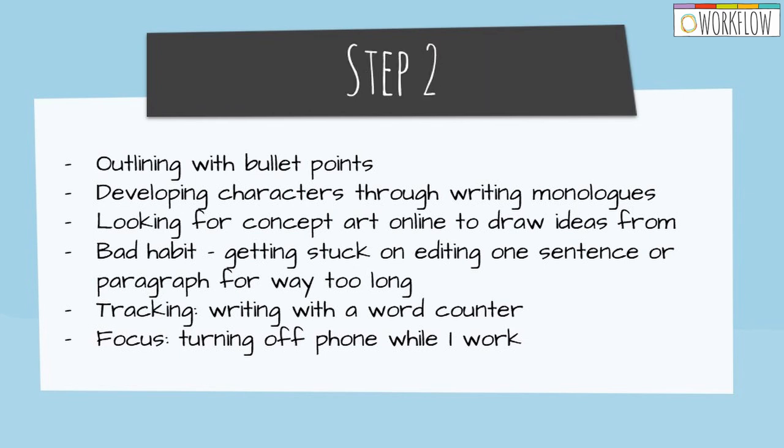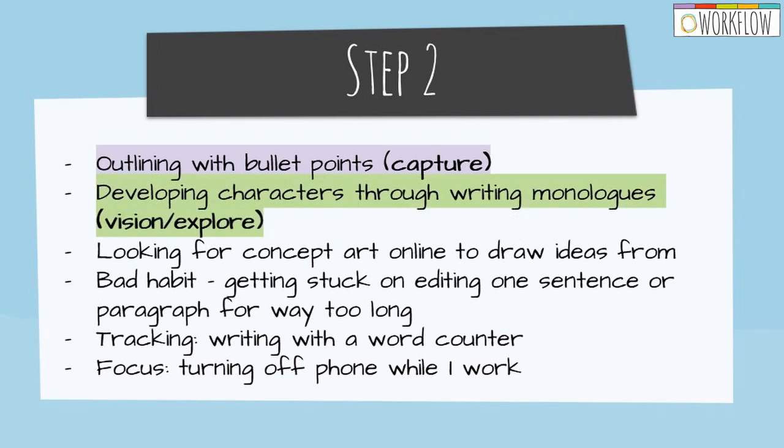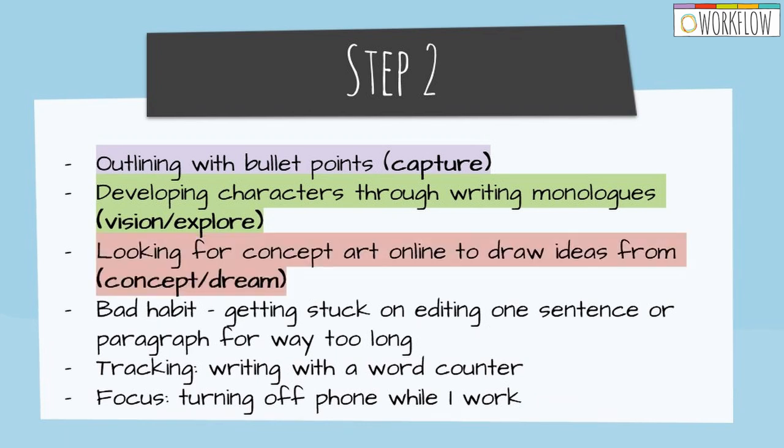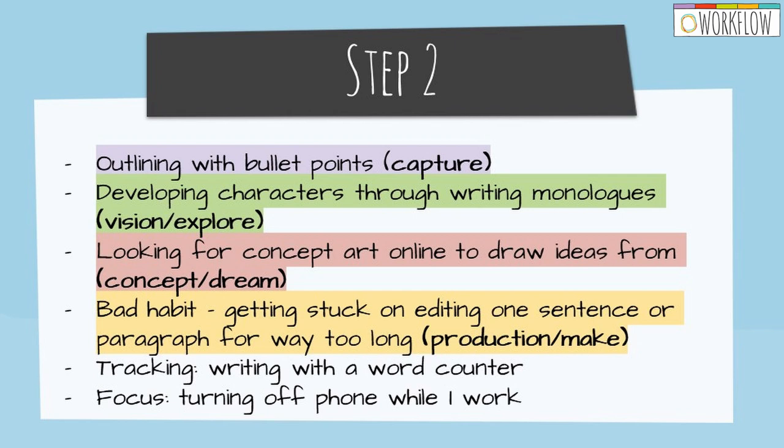Step number two. I want you to go through the list and try to identify where each habit fits in the workflow I just described. And you can even color code it to make it more fun. So, taking the same example. Outlining with bullet points would be a form of a capture. Developing characters through writing monologues. That would be part of the explorer slash vision process. Looking for concept art online to draw ideas from. That's obviously a dreamer slash concept part. Getting stuck on one sentence for too long. That would be part of the make slash production. And finally, tracking with the word counter and also turning off your phone while you work. That both of those would be a pro persona slash plan process. Okay?